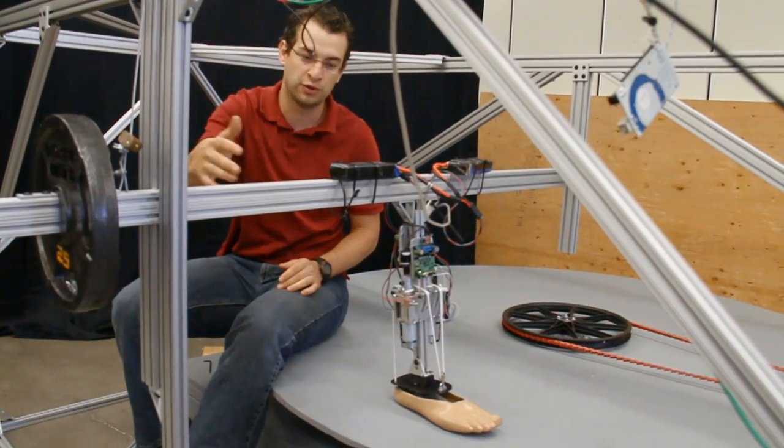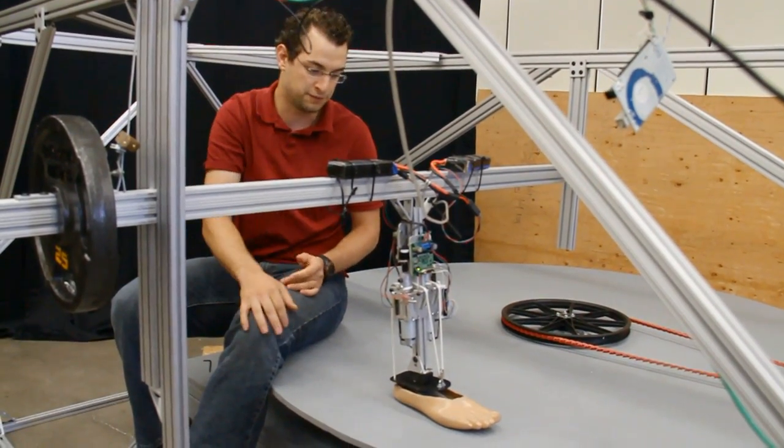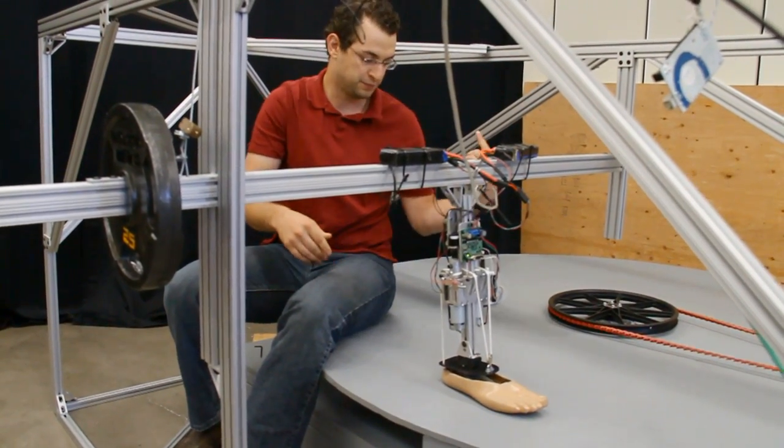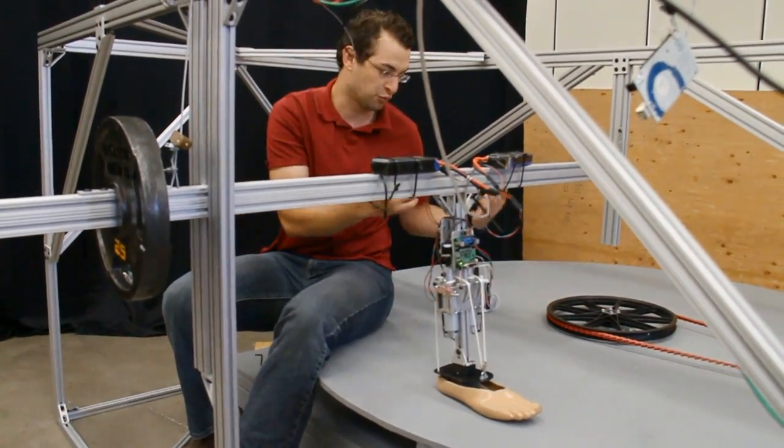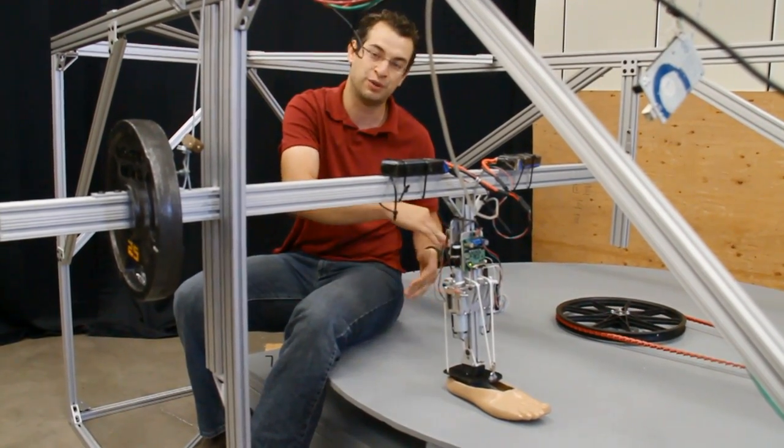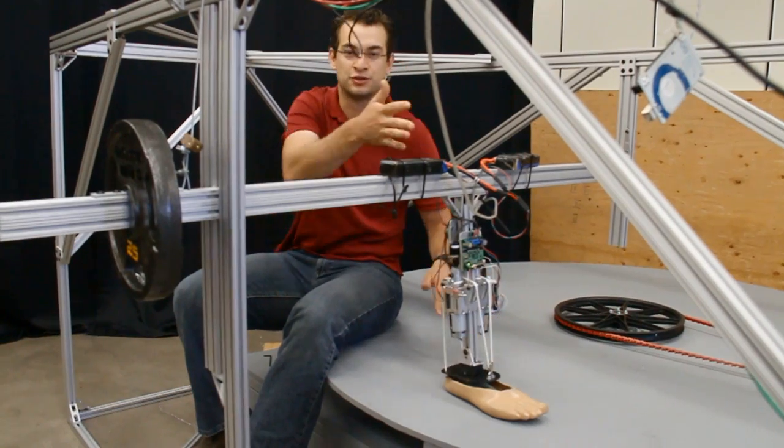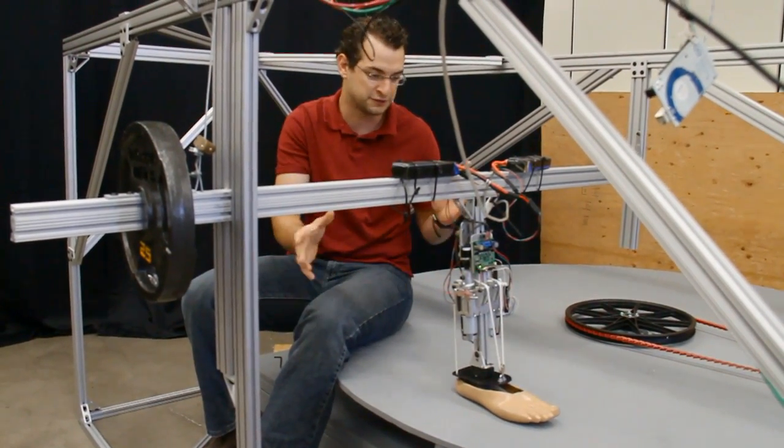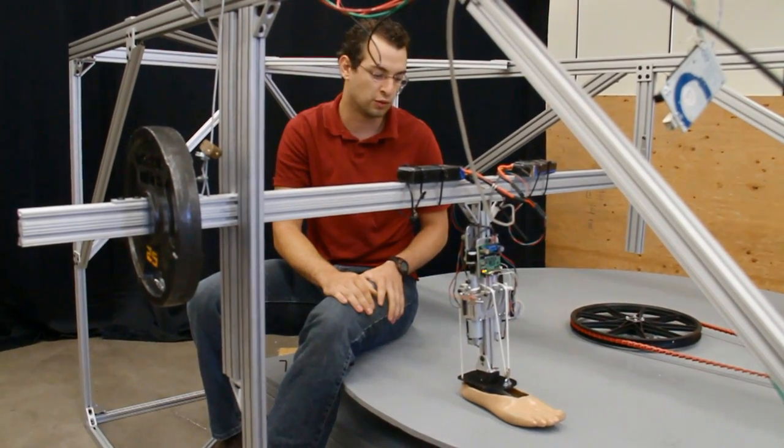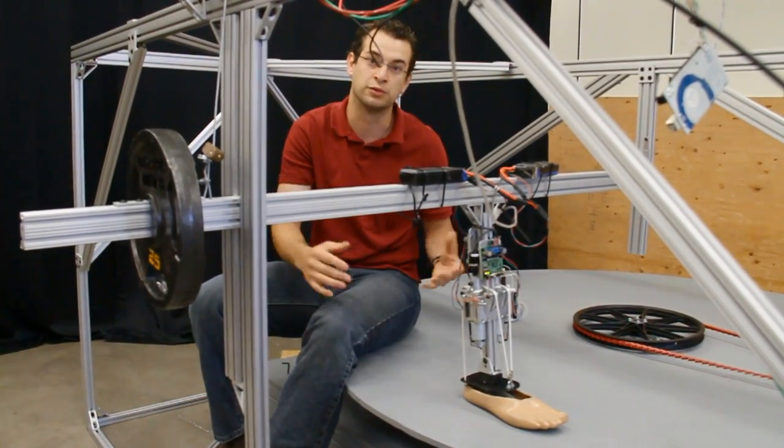This treadmill is capable of loading and unloading the ankle with as much weight as we want by changing weights. We can change speeds, radius of turning, inside or outside turning. We can also add irregularities to the surface to simulate obstacles. We have a lot of flexibility in whatever test we want to do on our prosthesis with repeatable results.